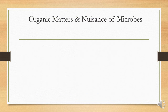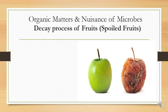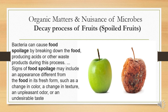Now, regarding organic matter and the nuisance of microbes — like the decay process of fruits, such as spoiled or rotten fruits — sometimes the decay process is not good for human life. For example, when an apple decays, it is not eatable. Bacteria can cause food spoilage by breaking down the food and producing acids or other waste products during this process. Signs of food spoilage may include an appearance different from the fresh form, such as a change in color, change in texture, an unpleasant odor, or an undesirable taste.